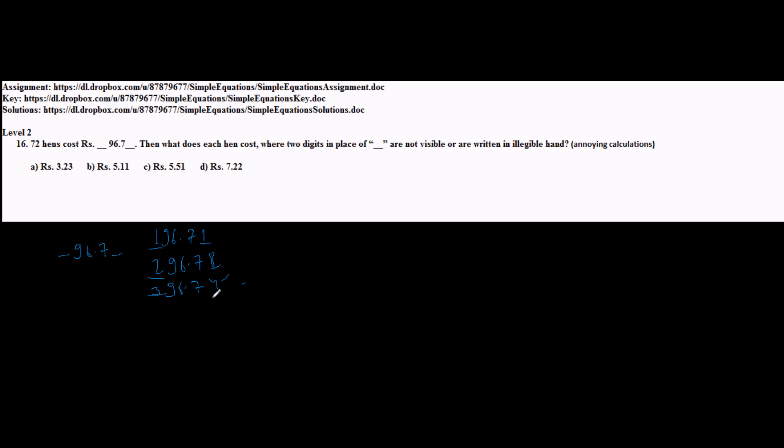So now how to go about solving this problem? I would say better try and multiply 72 by 3.23 and see that if you get 96.7 as your middle digits and something else as your last digits. So among the four options, one which gives me 96.7 as my middle 3 digits should be my answer. But then it is lots of calculations if I multiply 72 into 3.23, 72 into 5.11, 72 into 5.51, and 72 into 7.22. How can we avoid that?